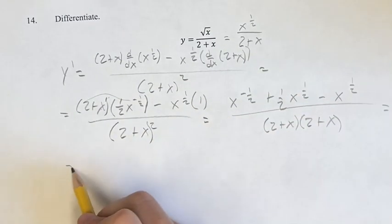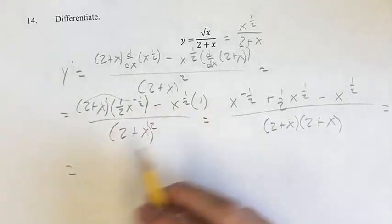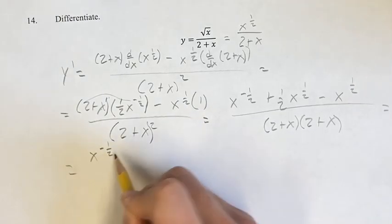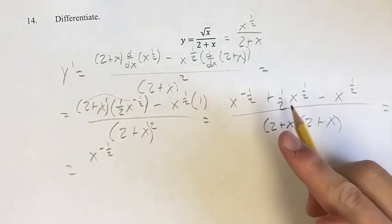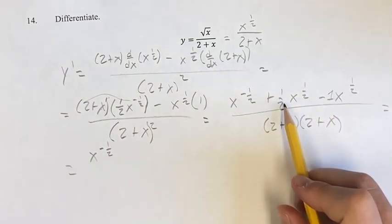Don't have to foil it out, but it's not that difficult, so we might as well. On the top, we're going to have x to the negative 1 half plus 1 half x to the 1 half, minus 1 x to the 1 half.